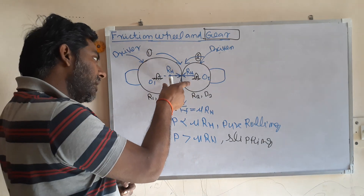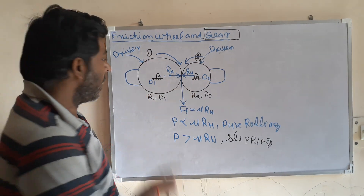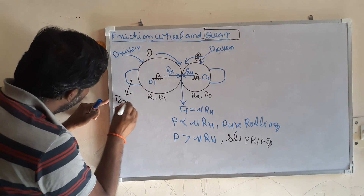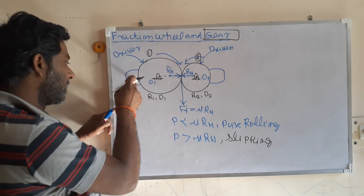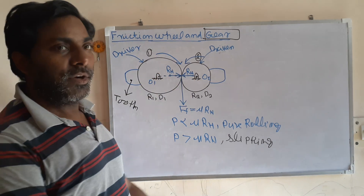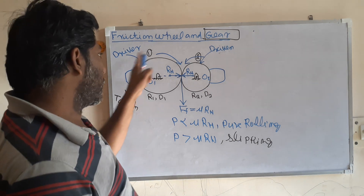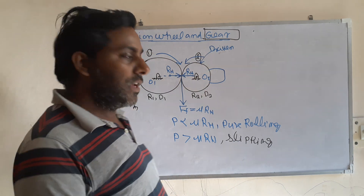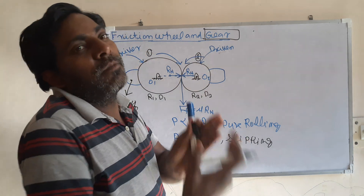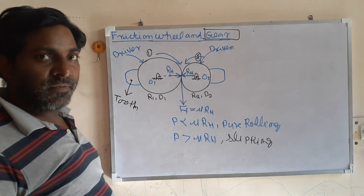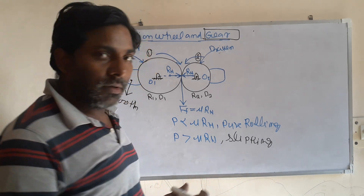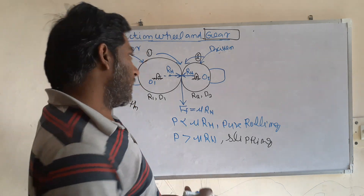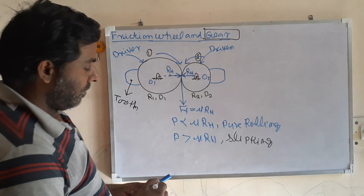This friction cylinder with projections is known as the gear, or toothed gear. These projections are known as the teeth of the gear. This is the idea development of the gear — how we moved from the friction cylinder to the gear. We developed the gear because we need to transmit more power, more force, and more torque.